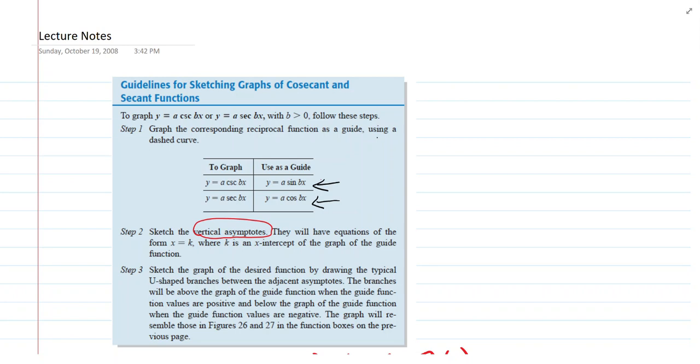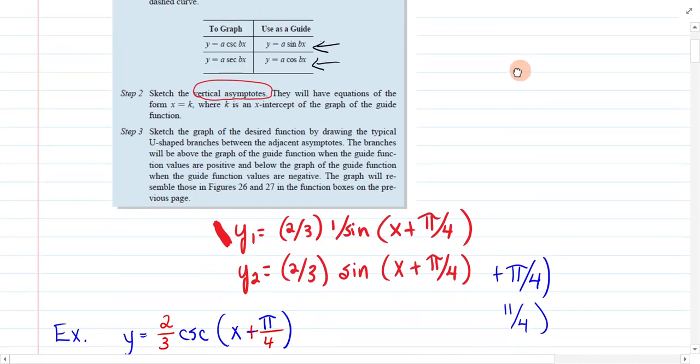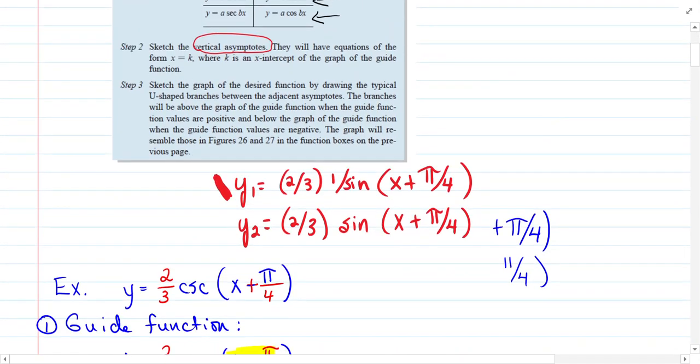All right, section 4.4 is graphing the last of our functions, cosecant and secant. And these are really interesting. They do have some asymptotes, but they're really unusual. So you're going to use a guide function. I think it's just easier to do it rather than read about how to do it.